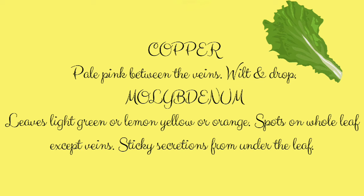In case of molybdenum deficiency, leaves will be light green, lemon yellow, or orange in color. Spots will be seen on the whole surface of the leaves except at the veins, and from the underside of the leaf we can also get some sticky secretions.